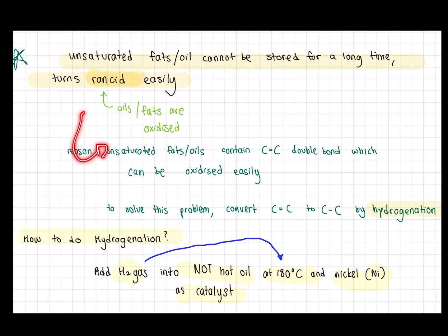If in the exam they question you on why that is the case, you can answer: unsaturated fats or oils contain the C=C double bond which can be oxidized easily. To solve this problem, you have to convert the C=C double bond into a C-C single bond by using a method called hydrogenation.